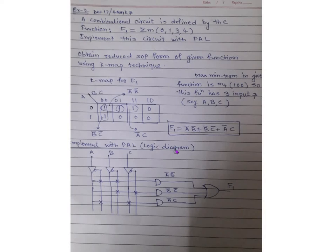Now implementing F1 with PAL: the PAL has three inputs A, B, C with A, Ā, B, B̄, C, C̄ available on the lines. We generate three product terms — A̅·B̄, B̄·C̄, and A̅·C — using AND gates with the corresponding inputs connected. These are connected to the fixed OR gate (not programmable) to produce F1.